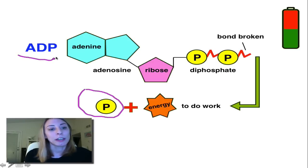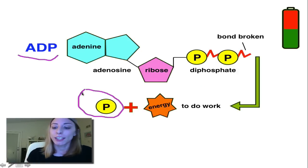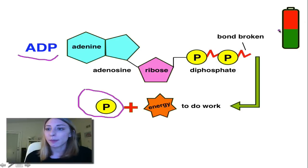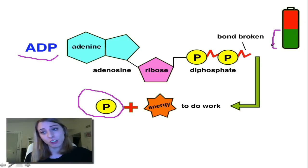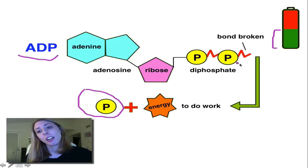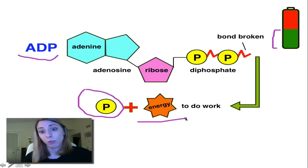This is why we have ADP — because there are two phosphates remaining. As far as the battery goes, we say that the battery is only half charged. It's not fully charged because the energy has gone and done work.